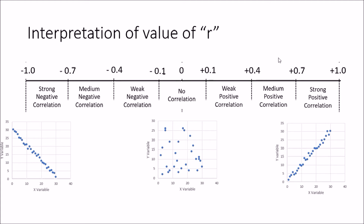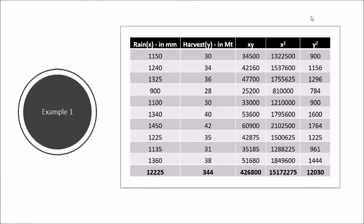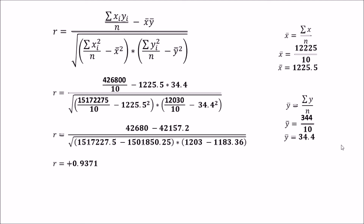Now let's look at an example. We have rain in millimeters as our x variable and harvest in metric tons as our y variable. The table includes columns for xy, x-squared, and y-squared, along with the summation of all these values — sum of x, sum of y, sum of xy, sum of x-squared, and sum of y-squared. We can substitute these values into the equation to find r.